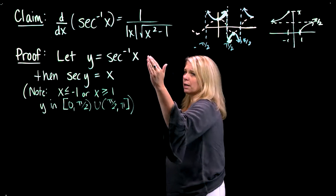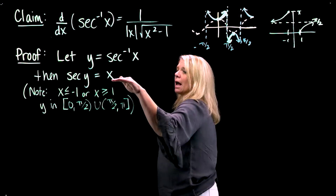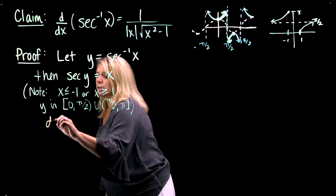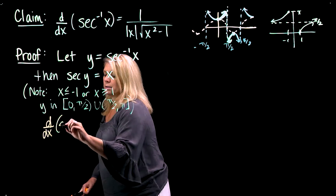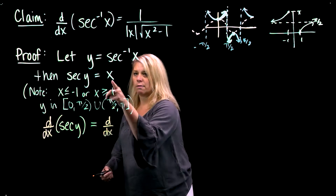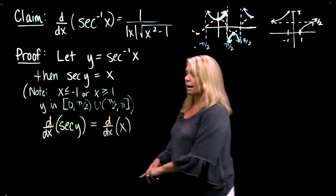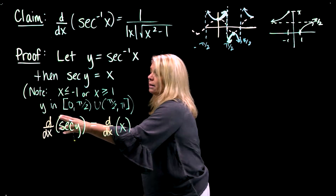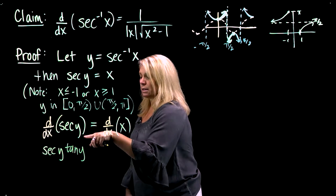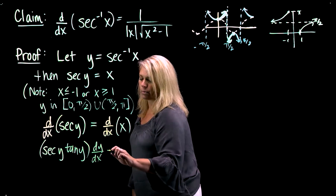Just like we did before, we're going to use the definition of the inverse function and then implicit differentiation to get our derivative. I'm going to take the step secant of y = x and differentiate both sides with respect to x. Using notation for the derivative with respect to x of secant of y equals the derivative with respect to x of x. On the left side we use implicit differentiation: we've already shown that the derivative of the secant function is secant times tangent, and since we're differentiating with respect to x, we multiply by dy/dx — that's really the chain rule. On the right side we have 1.